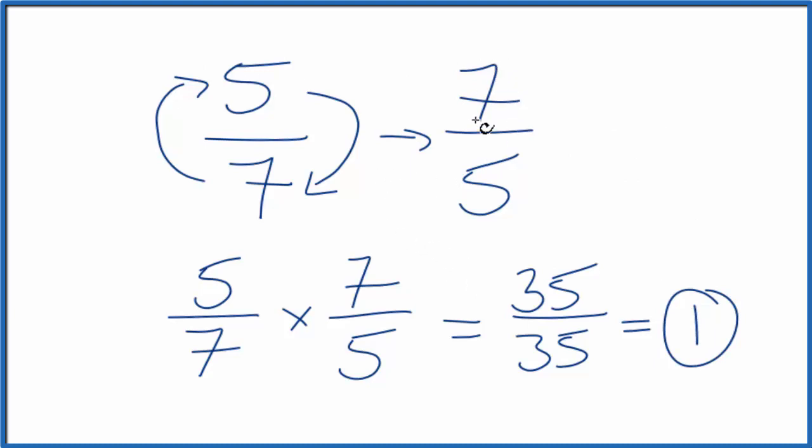We could also write seven-fifths as a mixed fraction. Five goes into seven one time with two left over. So one and two-fifths, that's the same as seven-fifths. So that's also the reciprocal for five-sevenths, since these are the same number, they're equivalent.